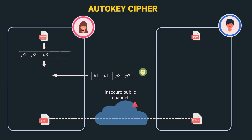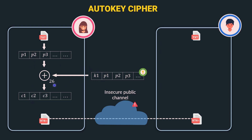Alice takes the plain text stream and the key stream and provides it to a bitwise addition operation limited by mod 26, where 26 represents that the output should be within Z26. The bitwise addition takes p1, adds k1, and applies mod 26, giving p1 + k1 mod 26. Similarly, the second character is p2 + p1 mod 26, and so on. This generates the ciphertext stream c1, c2, c3, where c1 = p1 + k1 mod 26, c2 = p2 + p1 mod 26. This ciphertext is sent to Bob via an insecure public channel.